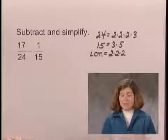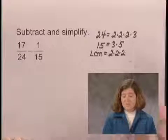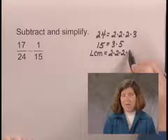The next prime we see is 3. There is one factor of 3 in 24, one factor of 3 in 15. The least common multiple will then need one factor of 3.